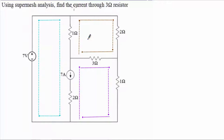In this video I will show you an example of super mesh analysis. I have to find the current through a 3 ohm resistor. We have to use super mesh analysis, which is also a type of mesh analysis.